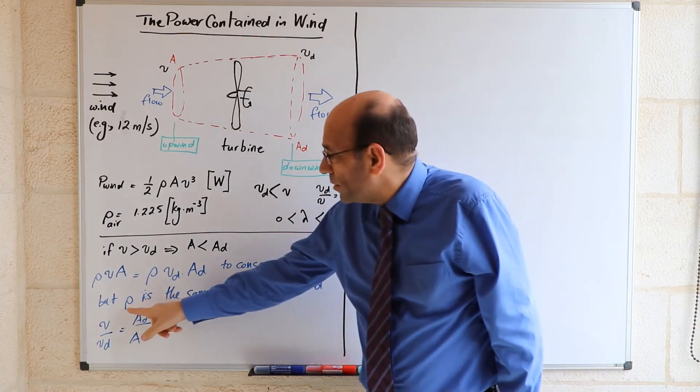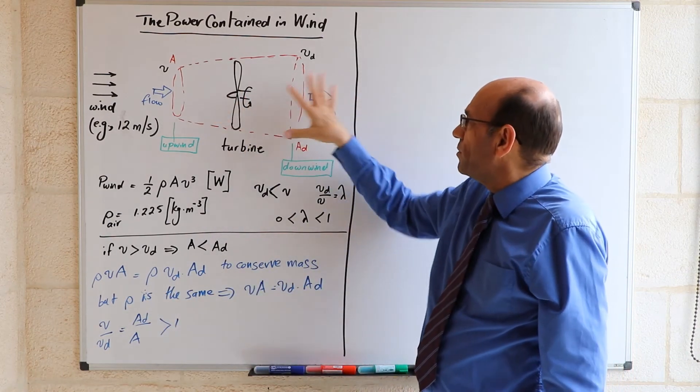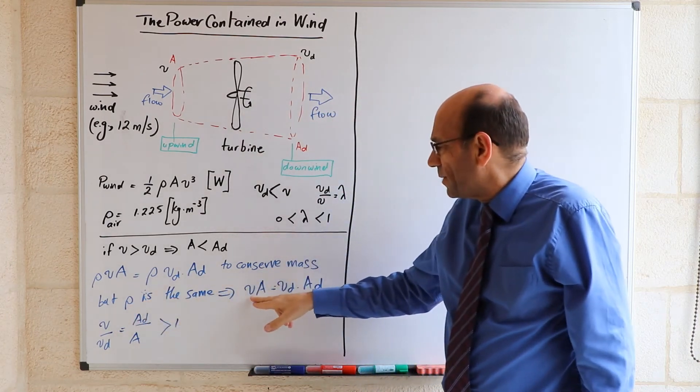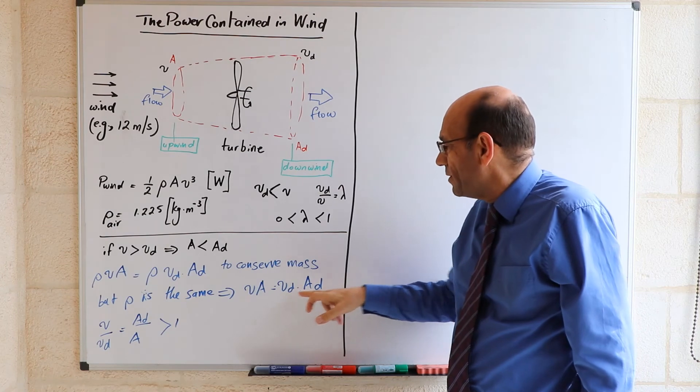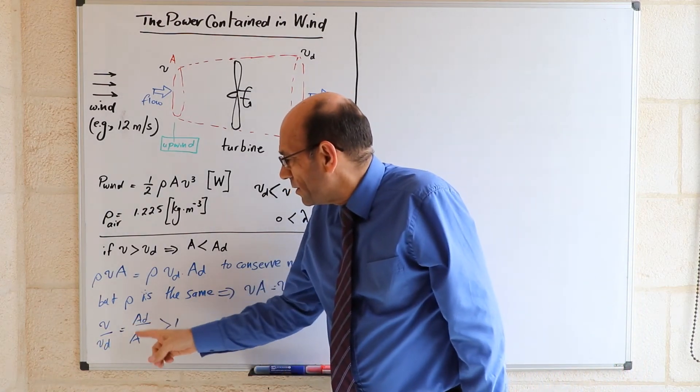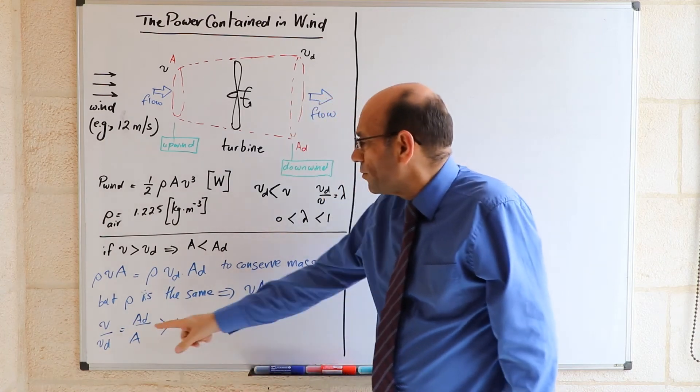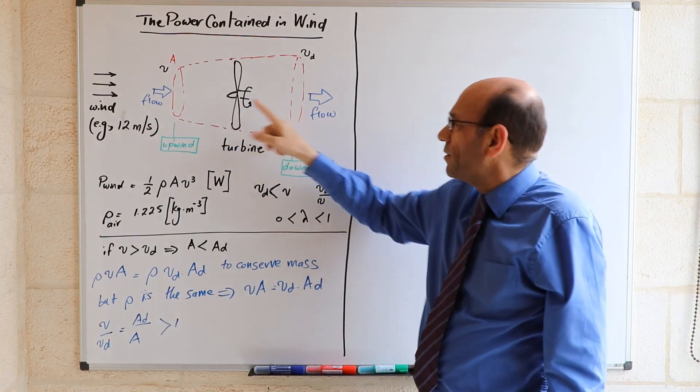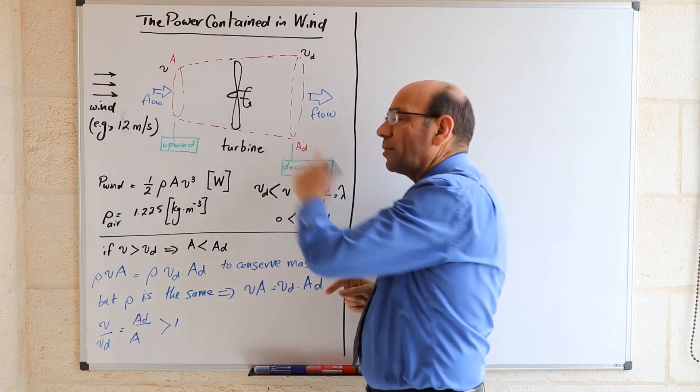We're assuming that rho has not changed, so the air has not been compressed in any way. So if rho is the same, then this becomes V times A equals VD times AD. And then V over VD is inversely proportional. So the reduction in speed from this point to this point, and the reduction in speed has been caused by the turbine.